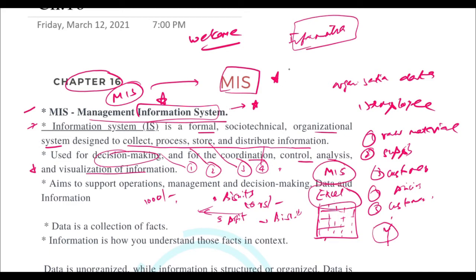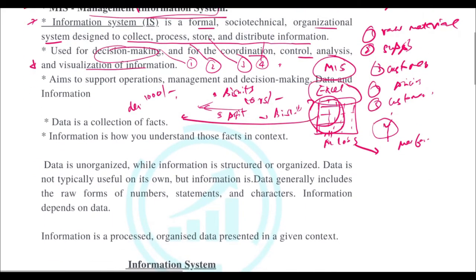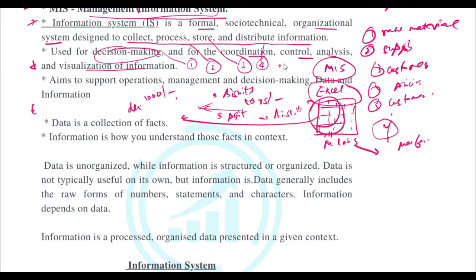Once you have the Excel sheet, you can always decide how to take decisions — whether your company is going at a loss or whether your manufacturing process is not good. All this data helps you take certain decisions. A simple Excel sheet is an information system tool that supports operation management and decision making.